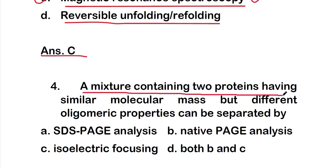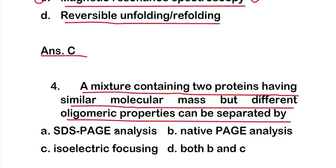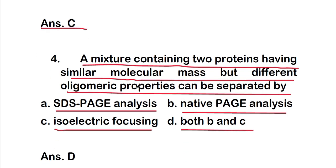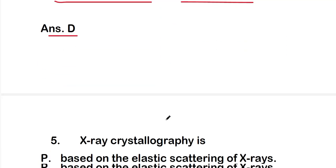Question 4: A mixture containing two proteins having similar molecular mass but different oligomeric properties can be separated by — A) SDS-PAGE analysis; B) Native PAGE analysis; C) Isoelectric focusing; or D) Both B and C. The right answer is option D — both native PAGE analysis and isoelectric focusing can separate such proteins.